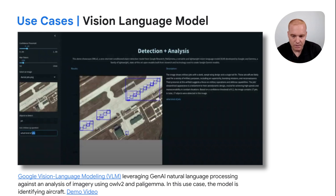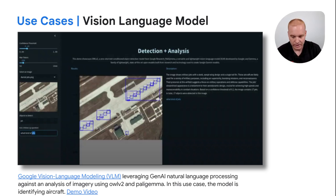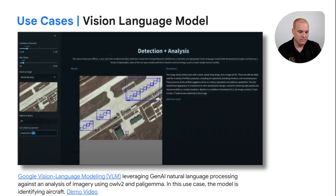This is a vision language model built by Google DeepMind. It leverages generative AI natural language processing against analysis of imagery using OWL2 and PaliGemma. In this use case, the model is identifying aircraft. You can see it's an overhead view of an airstrip — we asked it to identify jets, and it finds 17 jets, including pieces being used for maintenance on the runway and one jet coming out of the hangar. You can follow on with LLM queries asking what kind of jets, where they're flown, what location this might be. This model works out of the box with no additional training and handles a variety of pictures — wildlife, any imagery — doing a great job with image recognition and object detection.